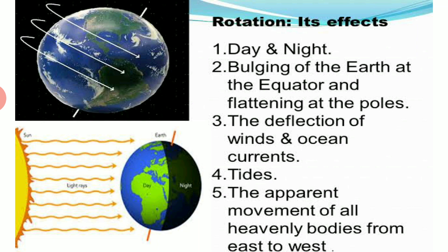Thus, the rotation of the earth from west to east determines the direction in which the sun, moon and stars rise and set. Fifth, rotation causes difference in time in various places. As earth rotates on its own axis, it moves about 15 degrees every 60 minutes — that is 360 longitudes divided by 24 hours. Each time zone is 15 degrees of longitude. Hence, 1 degree of longitude is equal to 4 minutes.